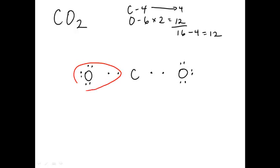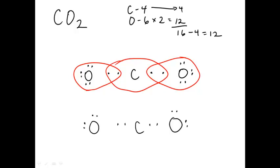Let's see what happens with that. Each of the oxygens now believes that it has 8 electrons. The carbon is left a little bit high and dry and only has 4 electrons.